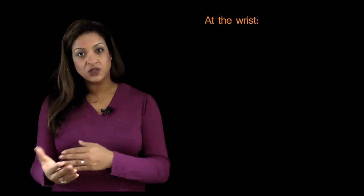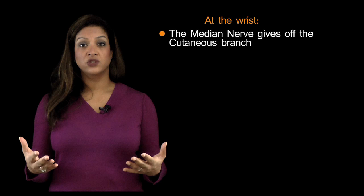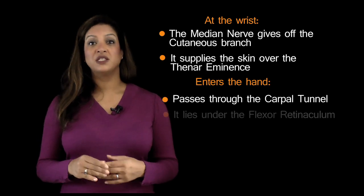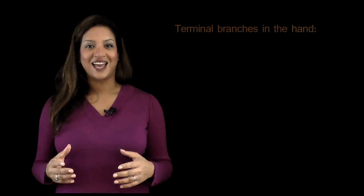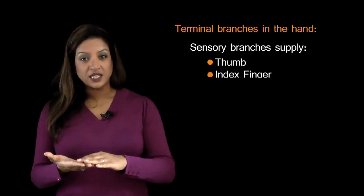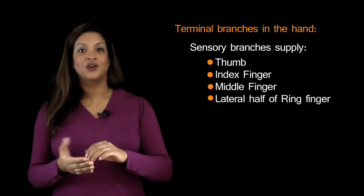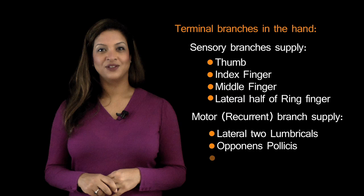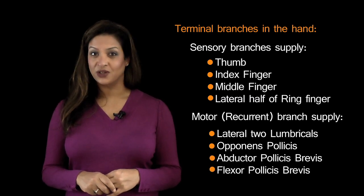About five centimetres proximal to the wrist, the median nerve gives off the cutaneous branch supplying the skin over the thenar eminence. It then enters the hand through the carpal tunnel, lying under the flexor retinaculum. In the hand it divides into sensory branches supplying the thumb, index, middle, and lateral half of the ring finger, plus the motor recurrent branch supplying the LOAF muscles: the lateral two lumbricals, opponens pollicis, abductor pollicis brevis, and flexor pollicis brevis. Remember: flex and loaf.